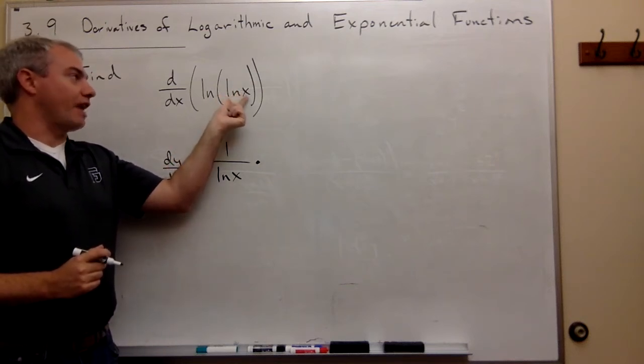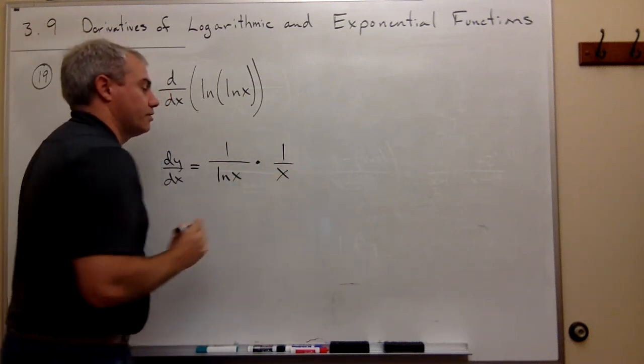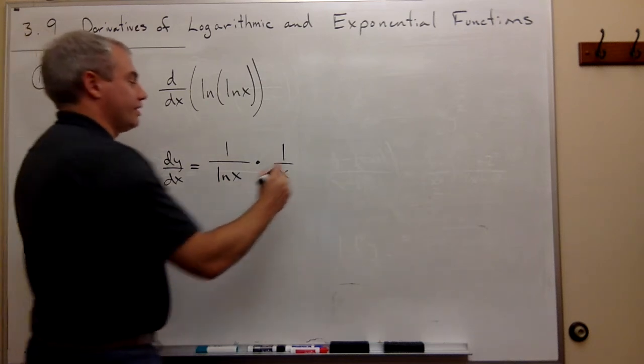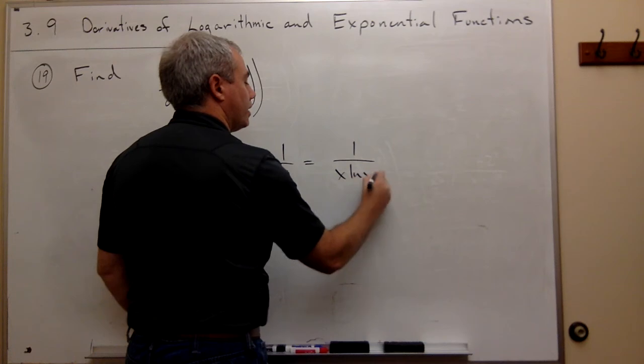The derivative of ln of x is 1 over x. And that's the derivative. So we could write this if we would prefer as 1 over x ln x, and that is the derivative.